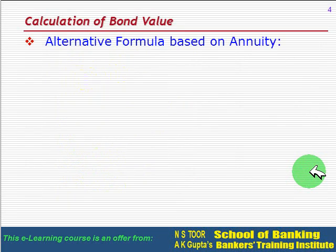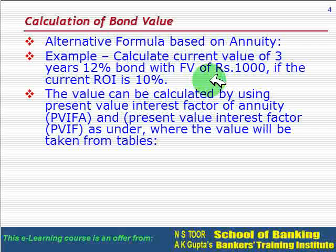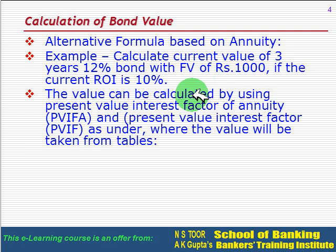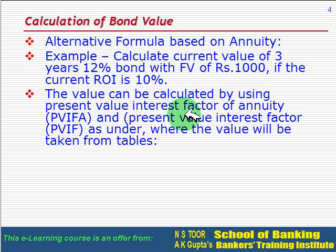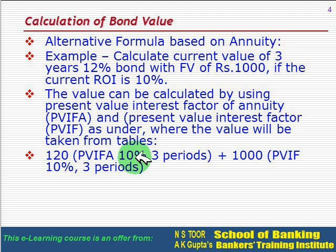Now let us see an alternative formula based on annuity. We calculate the current value of the same three-year, 12 percent bond with face value rupees 1000 at a current rate of 10 percent. Here the value is calculated using the Present Value Interest Factor of Annuity (PVIFA) and the Present Value Interest Factor (PVIF), taken from annuity tables. So: 120 multiplied by PVIFA at 10 percent for three periods, plus 1000 multiplied by PVIF at 10 percent for three periods.